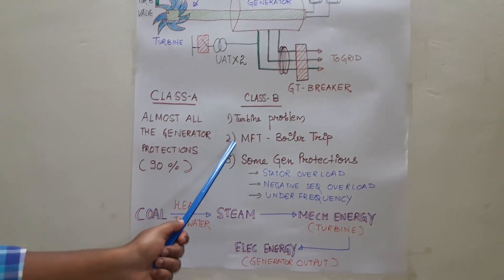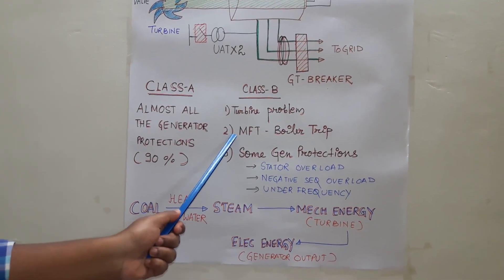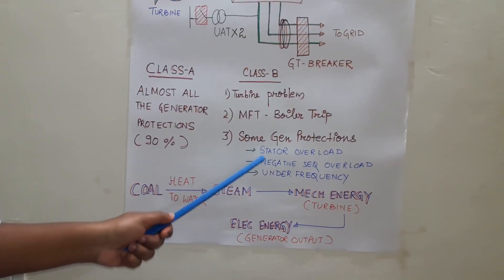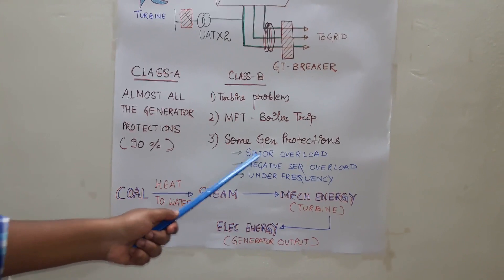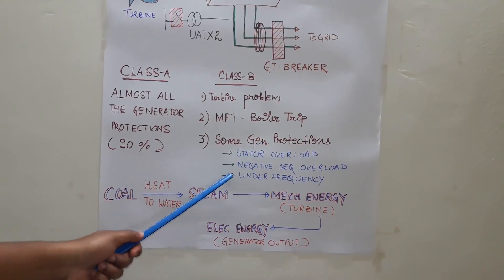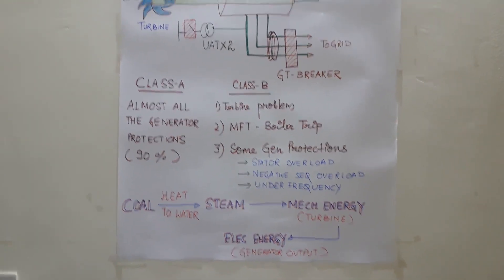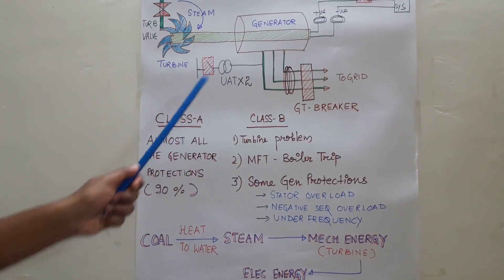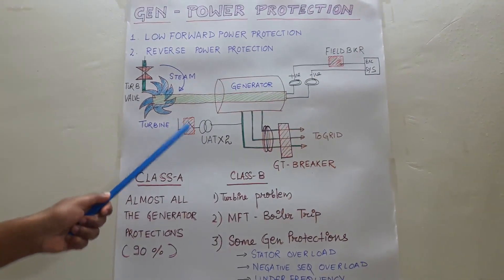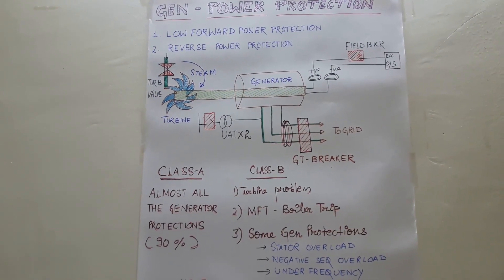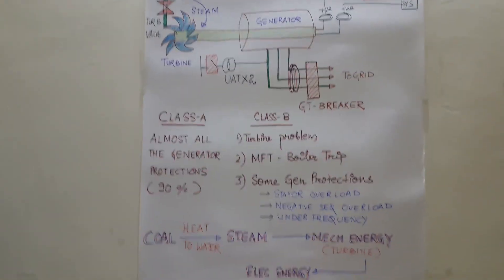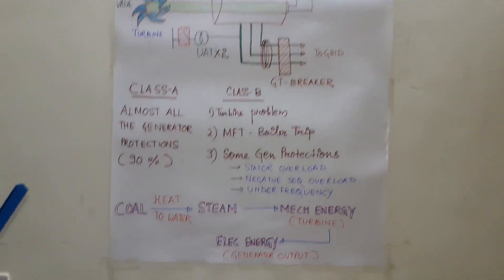So class B conditions include: turbine problems, forceful boiler trip, and generator protections where delay is acceptable — such as stator overload, negative sequence overload, and under-frequency. Almost 90% of protections are class A, where electrical breakers are tripped along with the steam valve. I hope you are clear with the class A and class B protection after this video. Thank you, and catch you in the next video.